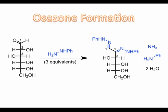Overall, in osazone formation, we see the monosaccharide acting as an electrophile and an acid in the presence of a reagent that we would expect to be both nucleophilic and basic. Each step of the mechanism we described involves one or more of the elementary steps of organic chemistry, and although the transformation is complex, we can break it down into a series of sensible elementary steps.